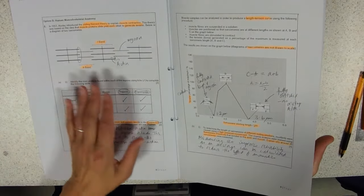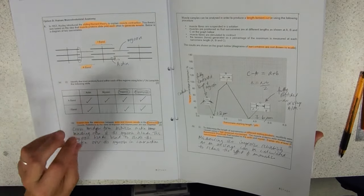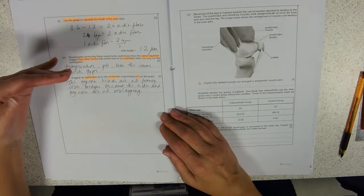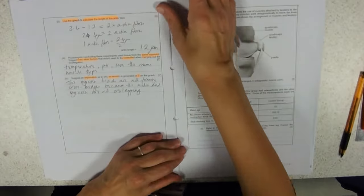Remember that your option paper covers everything. This is covering structure of musculoskeletal tissues, sliding filament theory, bit of practical, bit of maths, bit of practical control things. And now we're on to joints.